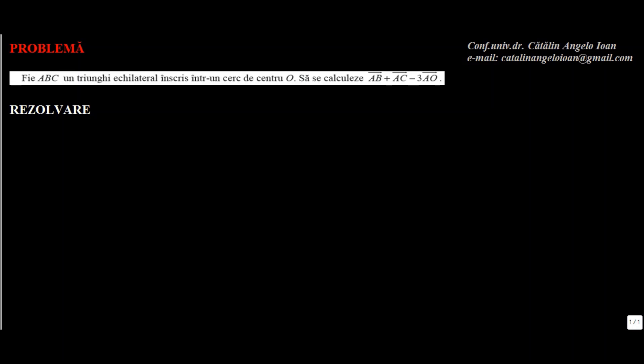Fie ABC un triunghi echilateral înscris într-un cerc de centru O. Să se calculeze AB plus AC minus 3AO. Haideți să facem figură: triunghiul ABC și centrul O al cercului. Știm că triunghiul este echilateral. Ce ne cere? Să calculăm această expresie: AB plus AC minus 3AO.